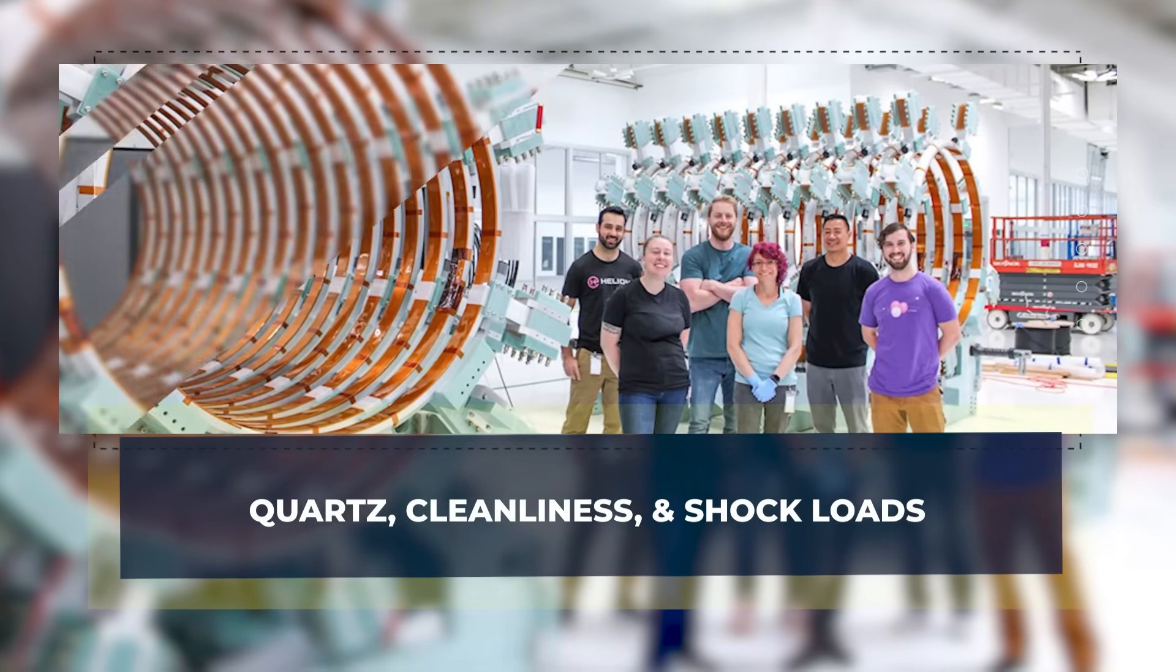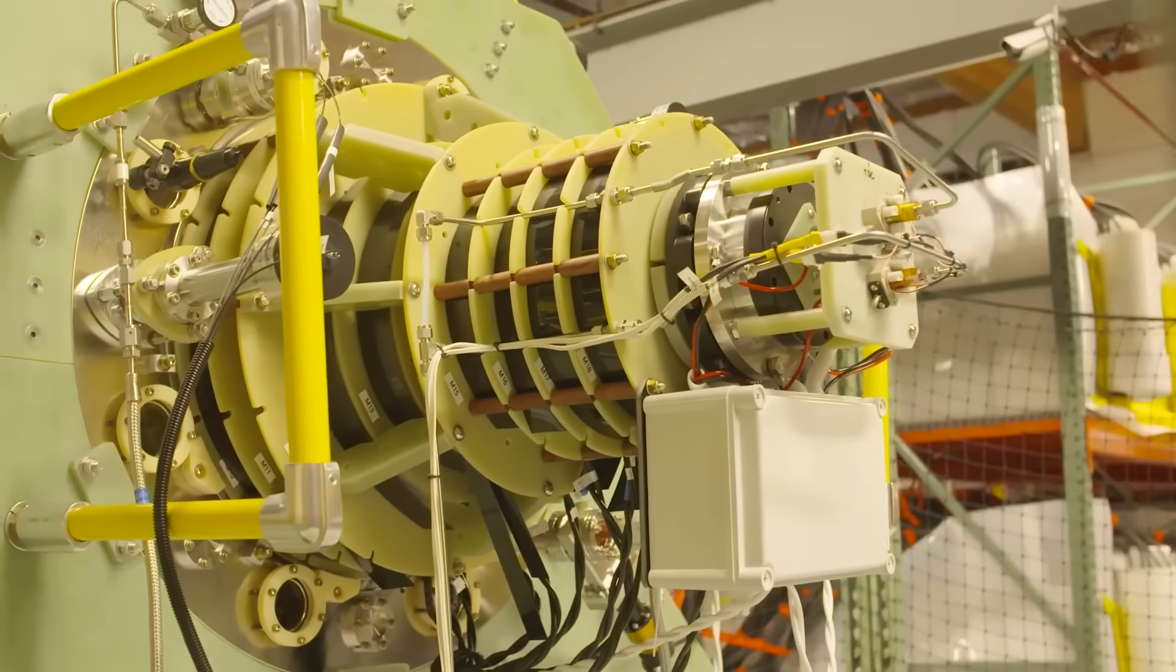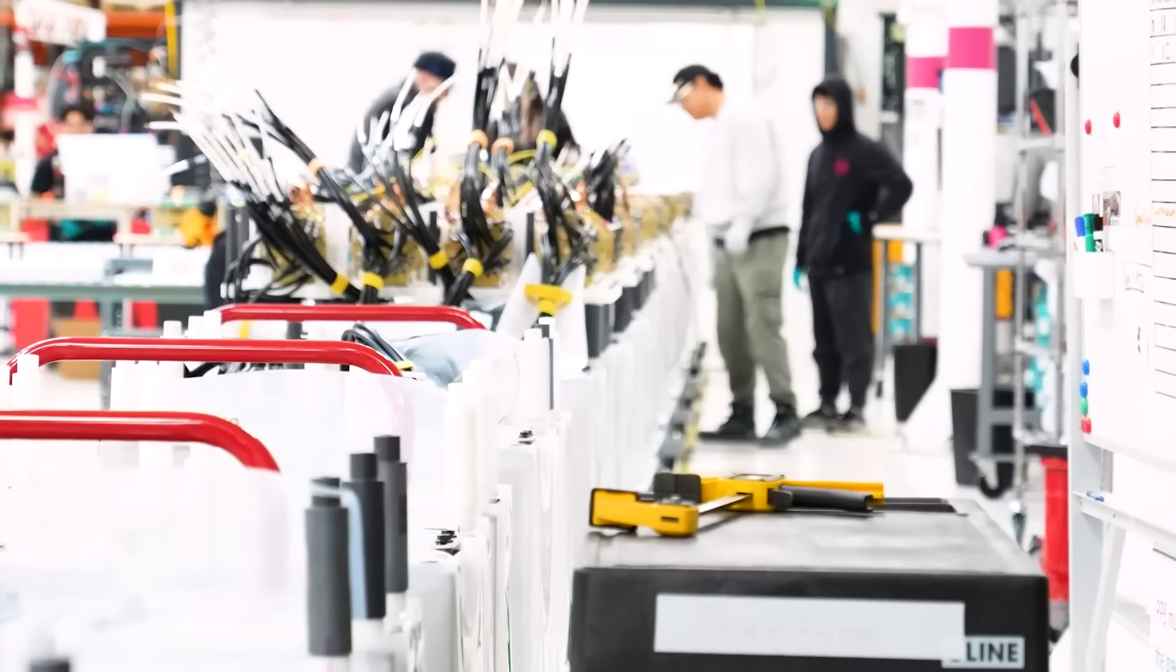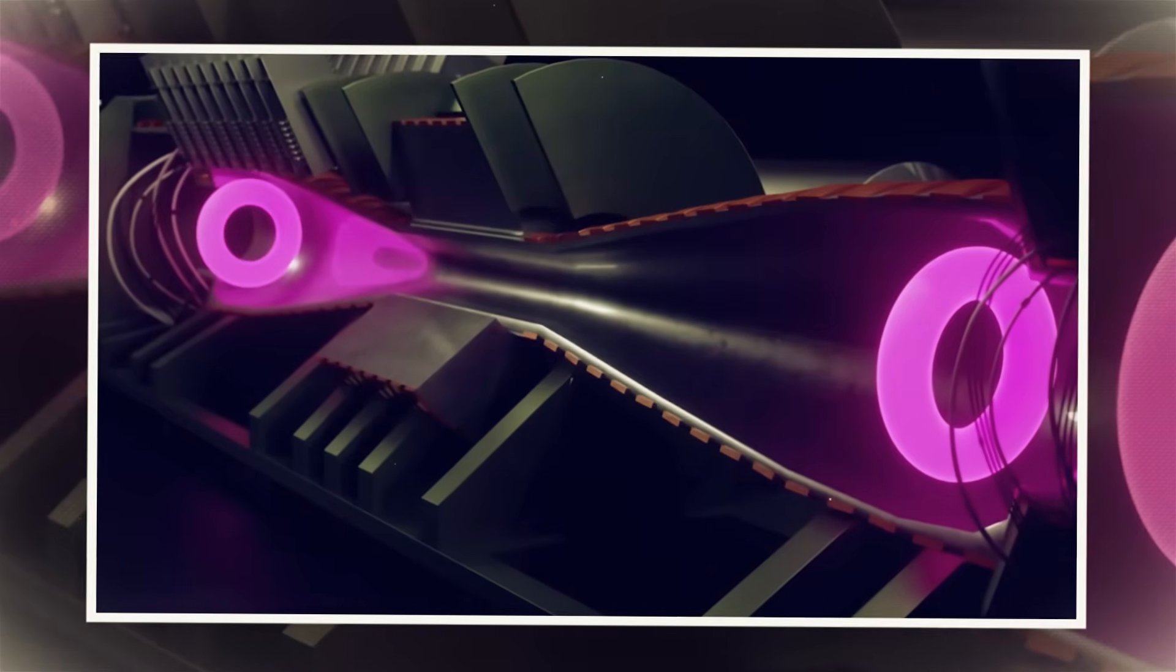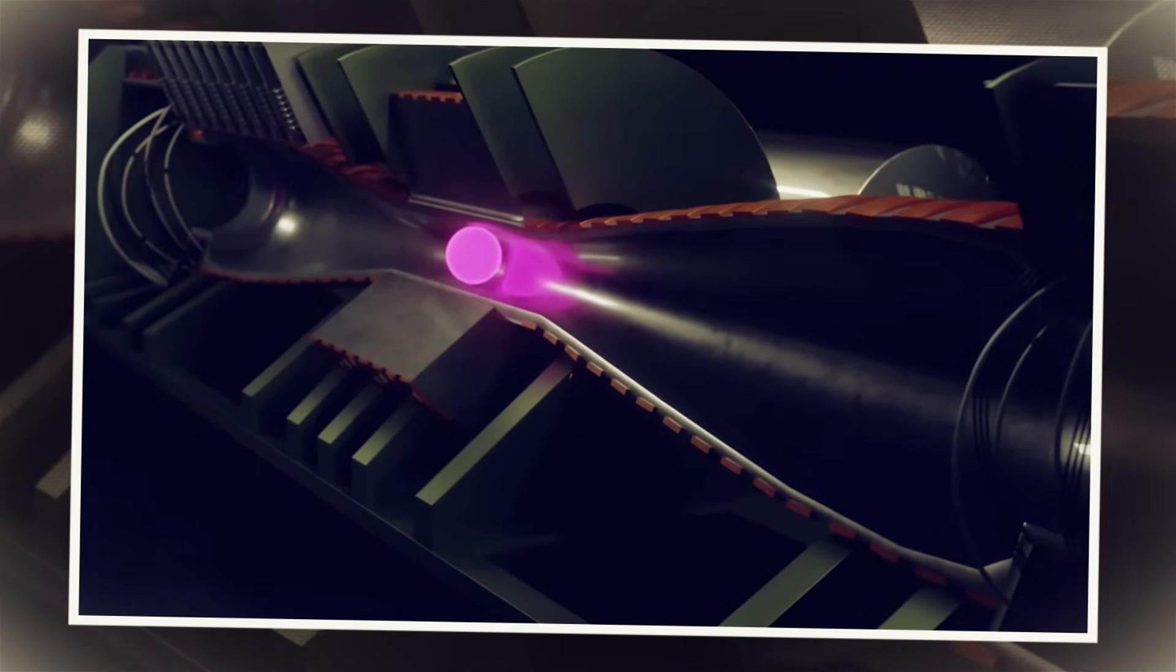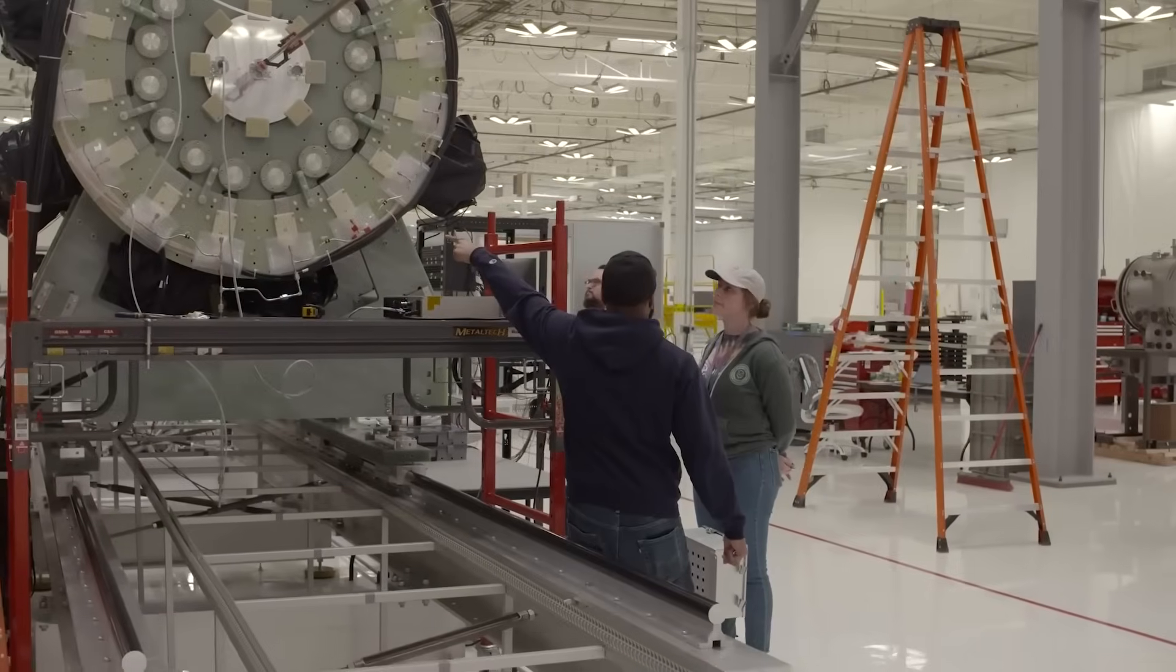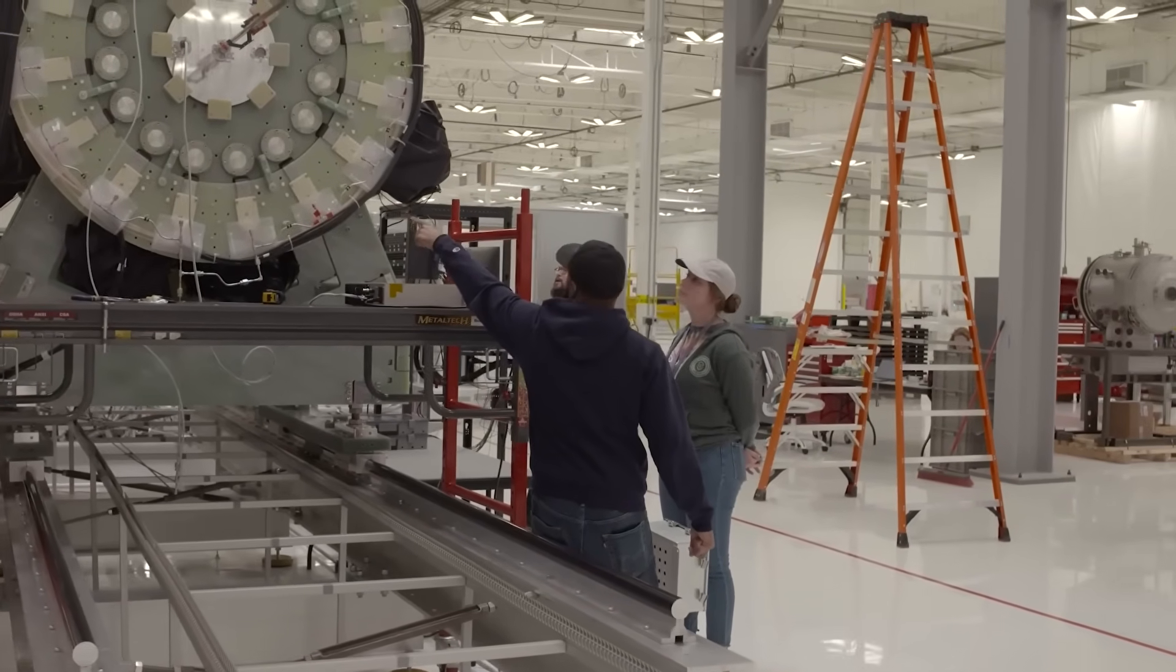Quartz, cleanliness, and shock loads. The vacuum tube at the heart of Trenta and Polaris is made of quartz, and that choice creates a chain of headaches. Quartz must hold a vacuum, survive near hot plasma, and fit inside a dense stack of magnets without cracking. As machines grow, making large, high-quality quartz tubes becomes a manufacturing challenge on its own.